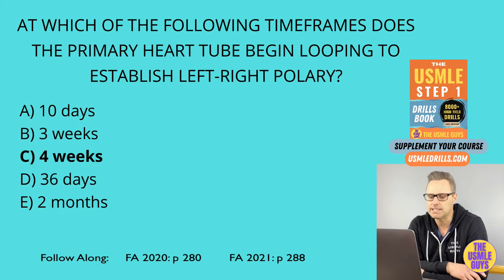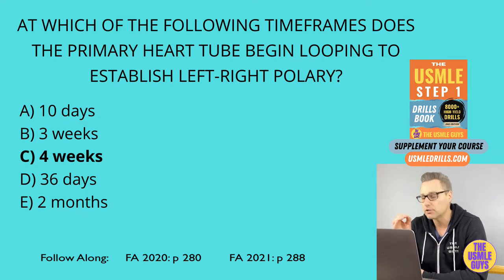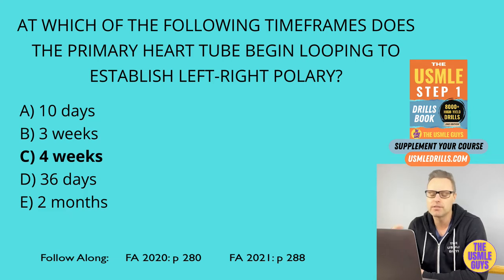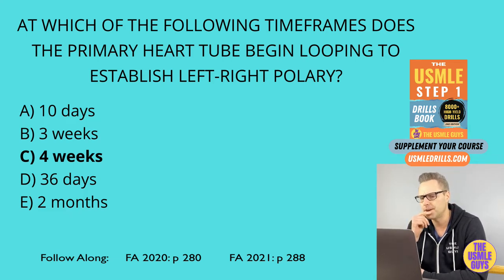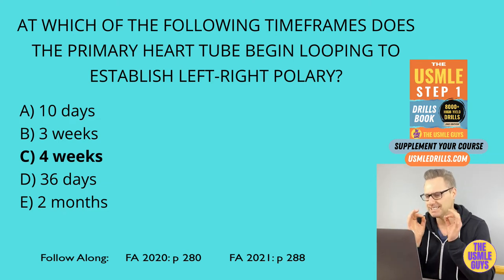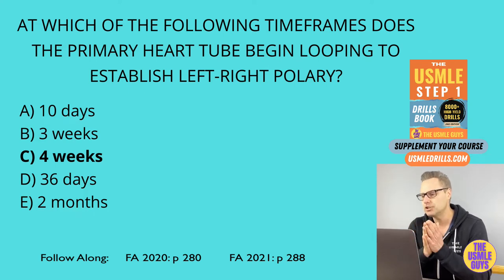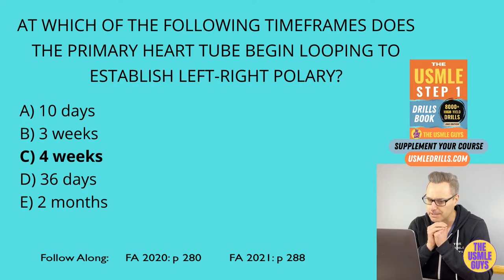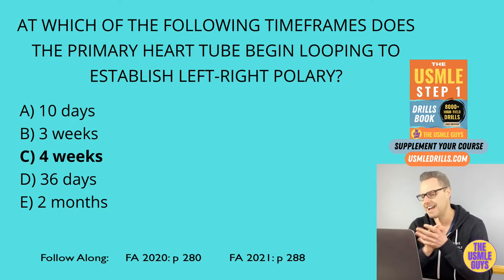The correct answer here is C. Remember that when looking at cardiac looping, the primary heart tube begins looping at four weeks with the goal of establishing left to right polarity. One major defect that can happen is when we have a dynein defect and it doesn't rotate correctly, leading to a condition known as dextrocardia. Don't forget that this pathology — the dynein defect — is also associated with Kartagener syndrome.